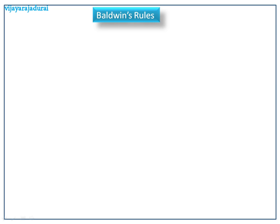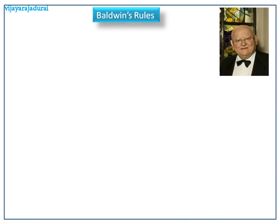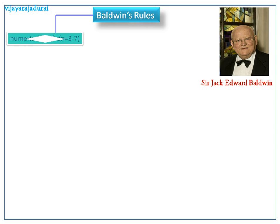Baldwin described his ring closure rules in terms of three features of the reaction. The first one is the ring size being formed, indicated through a numerical prefix. The second one is the nature of the breaking bond, whether it is exo or endo, and the hybridized state of the carbon atom undergoing the ring closing reaction.